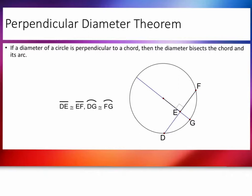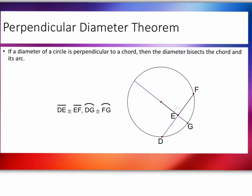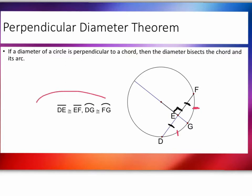Let's look at a theorem with perpendicular diameter. Remember, perpendicular creates a 90-degree right angle. If the diameter of a circle is perpendicular to a chord — just a segment that does not go through the center — then the diameter bisects the chord and its arc. That means these become congruent segments, there's a 90-degree angle there, and the chord segments are also congruent. So DG is congruent to FG. Make sure you draw the picture and mark it up.